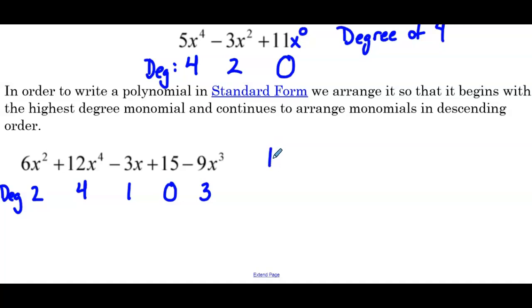So that means we're going to start with 12x⁴, follow that up with -9x³. Then we're going to have +6x², followed by -3x, +15. So there we have a polynomial written in standard form. So let me just fix that 6x so it looks a little nicer. There we go.